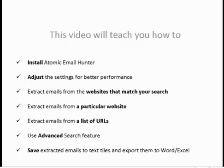So after viewing this video, you will be able to install Atomic Email Hunter, adjust the settings for better performance, extract emails from the websites that match your search, extract emails from a particular website, extract emails from a list of URLs, use the advanced search feature, and save extracted emails to text files or export them to Word or Excel.